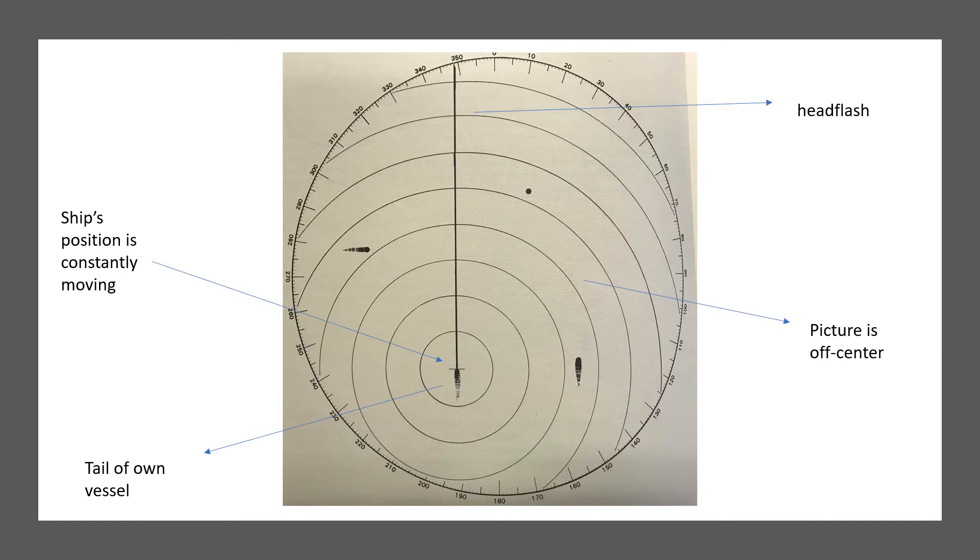The tail appearing behind the targets and your vessel gives you an immediate appreciation of the true course and speed of all vessels including your own. Now what else do you see on this picture? You will see three targets. To port is a vessel crossing your bow from west to east, making approximately the same speed as your vessel.